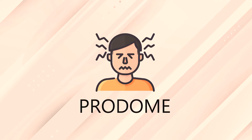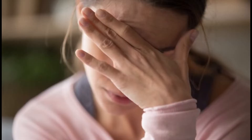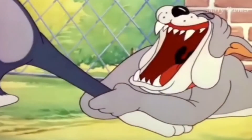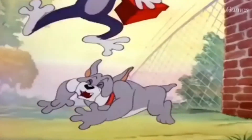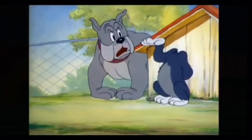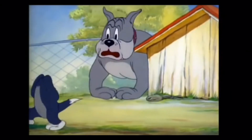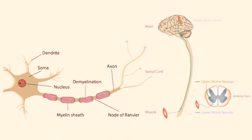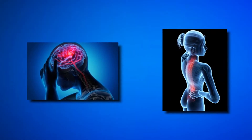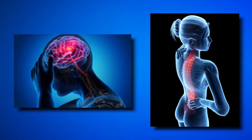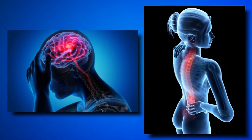The prodrome stage presents early symptoms like fever, headache, anxiety, cough, nausea and vomiting, and pain at the site of the bite. During this period, the virus travels through the motor neurons toward the brain, and while traveling, causes a little inflammation in the motor neurons, producing these prodromal symptoms.